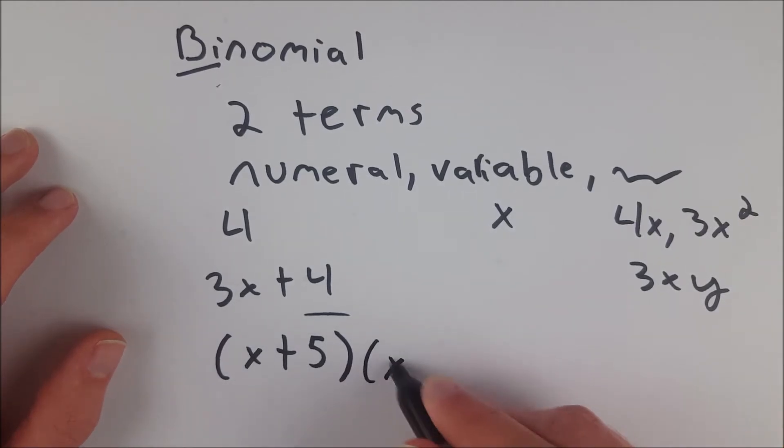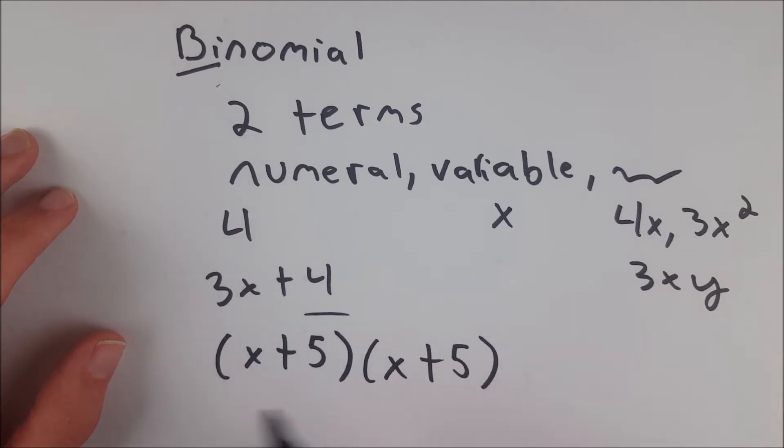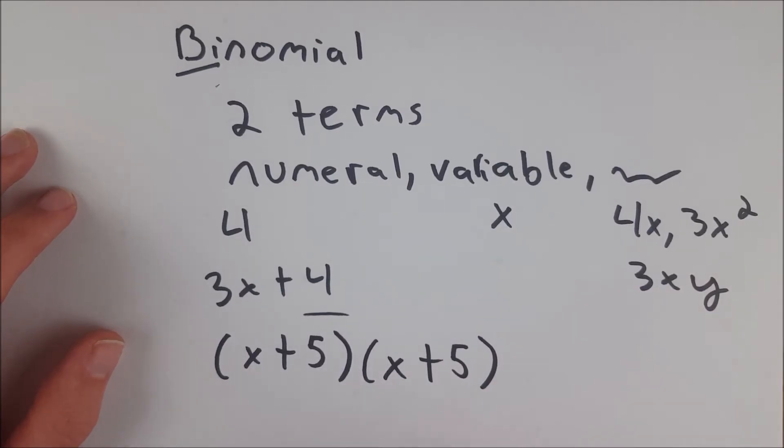But if we multiply it by another x plus 5, even though now you just have sort of one product here, you've got to do the multiplication out to figure out whether or not it's a binomial. And if you multiply these binomials together, you will end up getting x squared plus 10x plus 25.